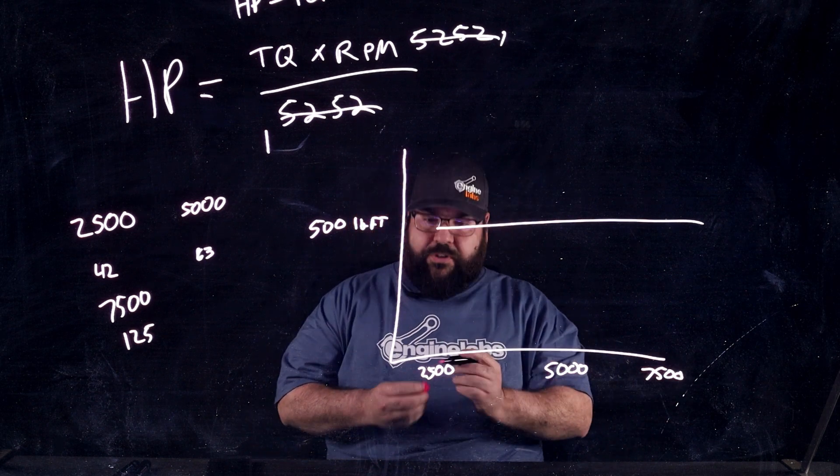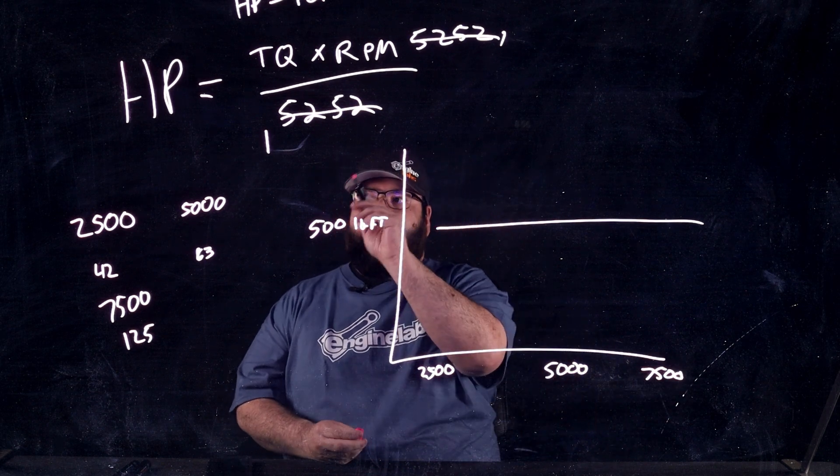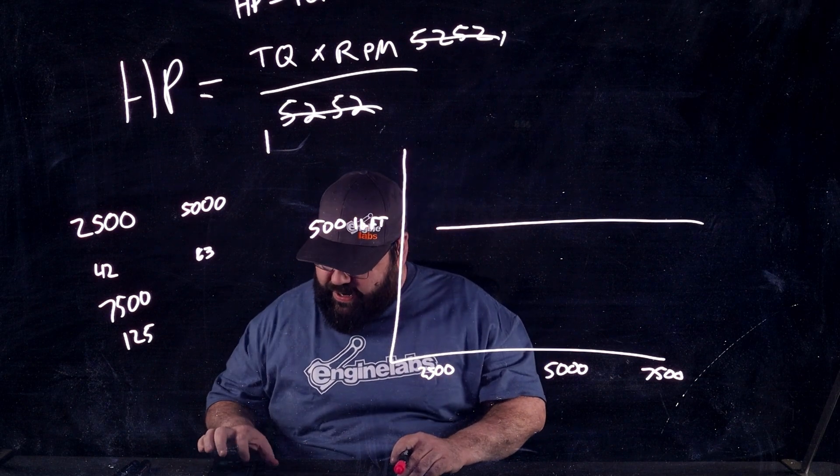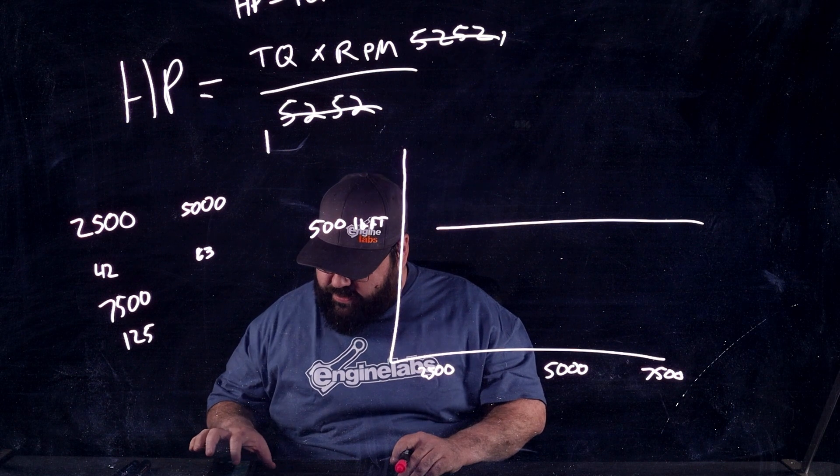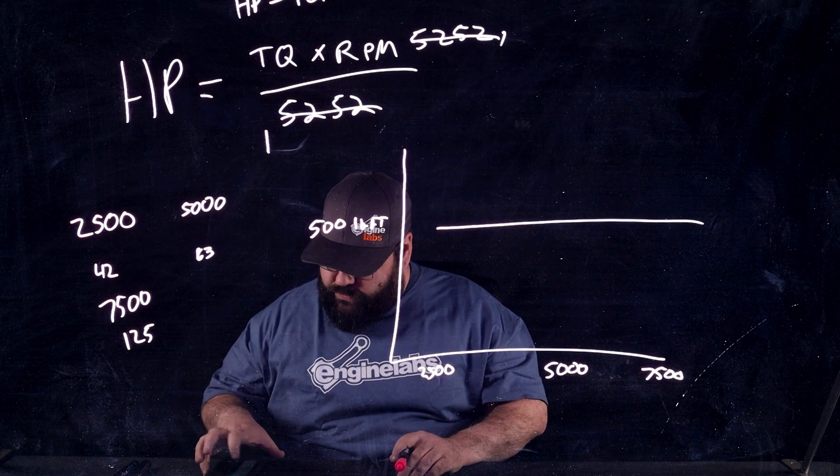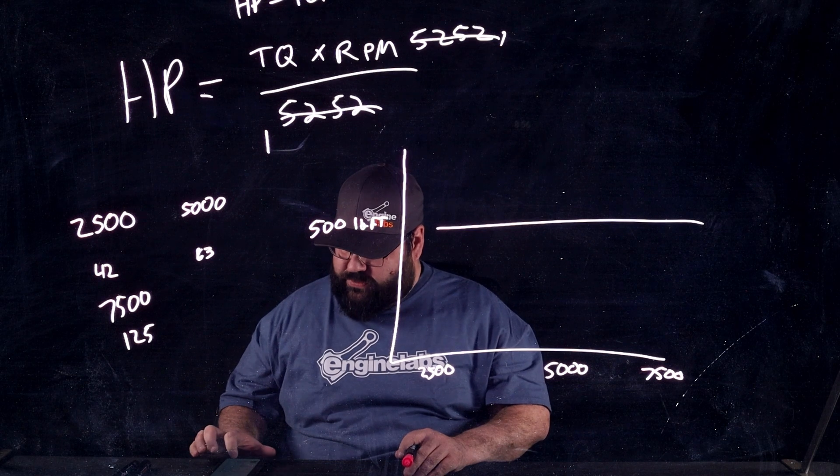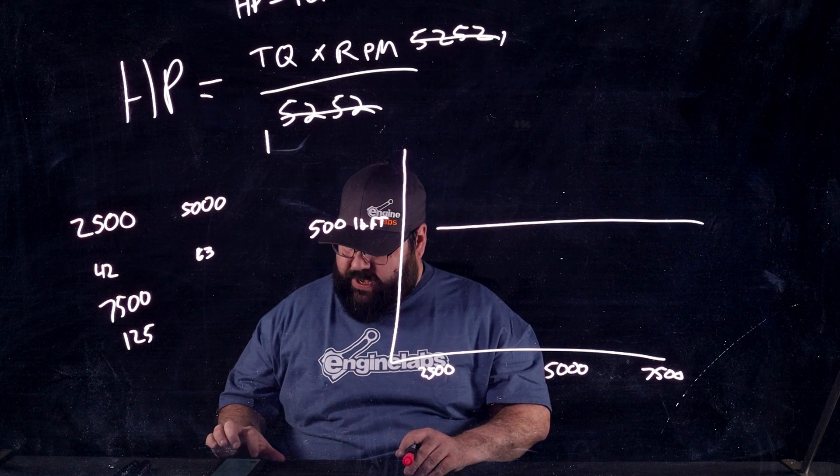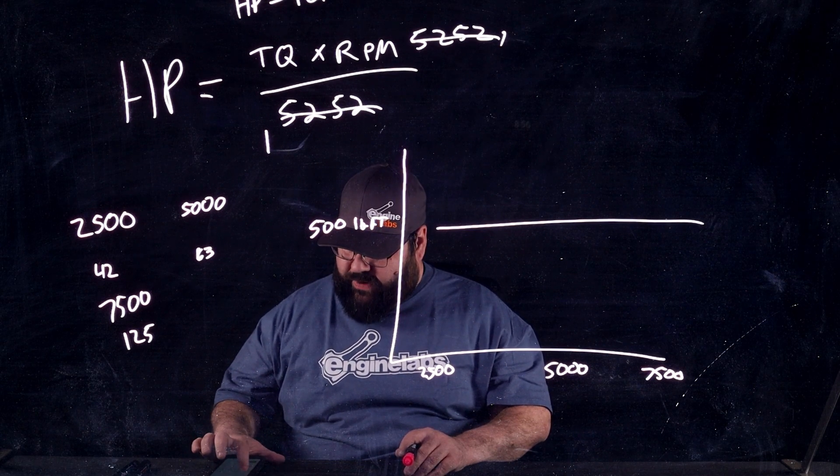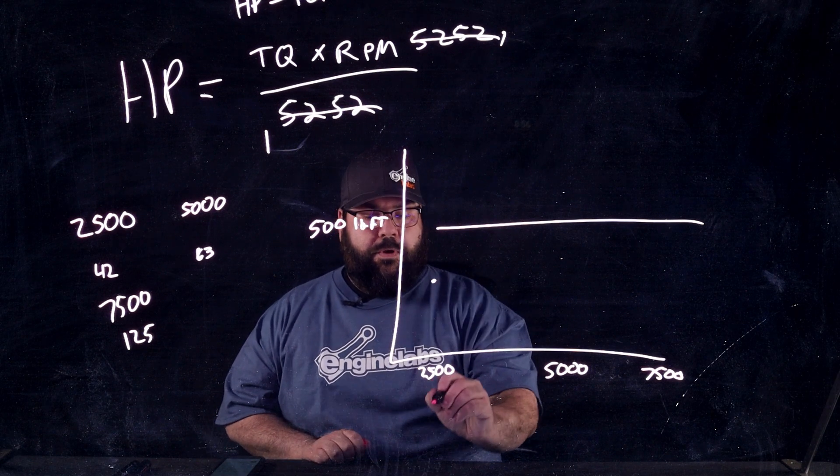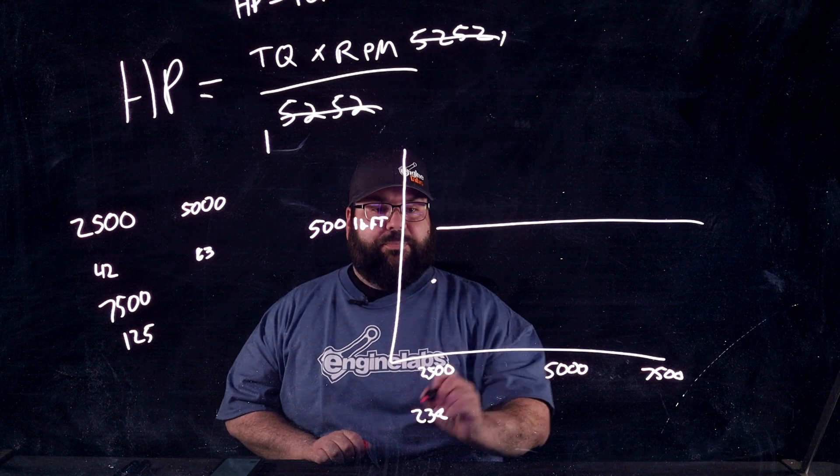All right, cool. So, let's do the first equation. We're going to go horsepower equals torque. Sorry, let me pull up my calculator here, my handy-dandy calculator. All right. So, we're going to go 500 pound-feet of torque times 2500 RPM. Then we're going to divide that by 5252. And we get 238 horsepower.